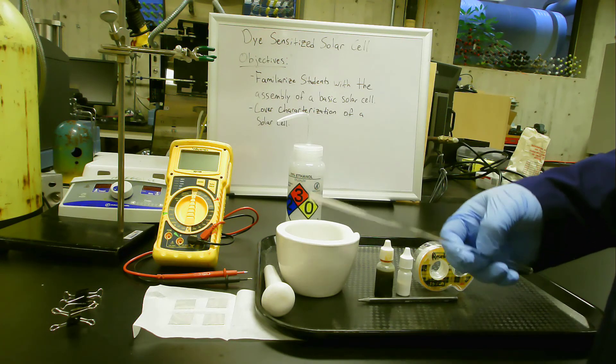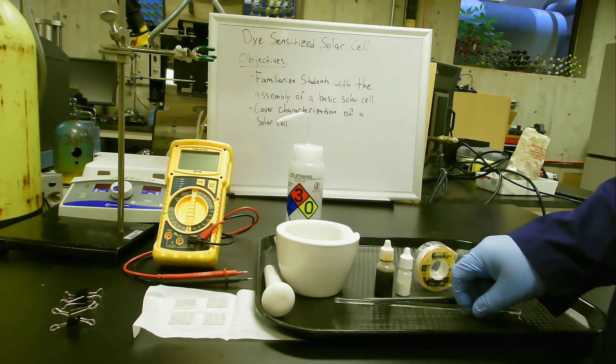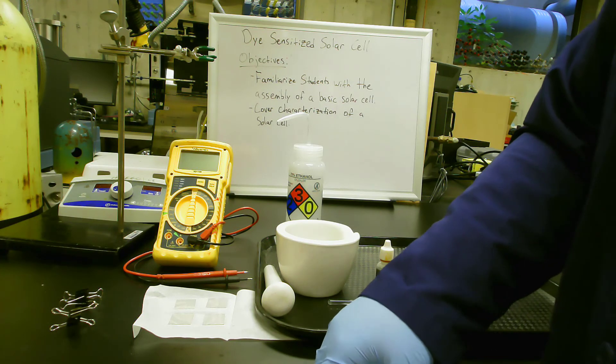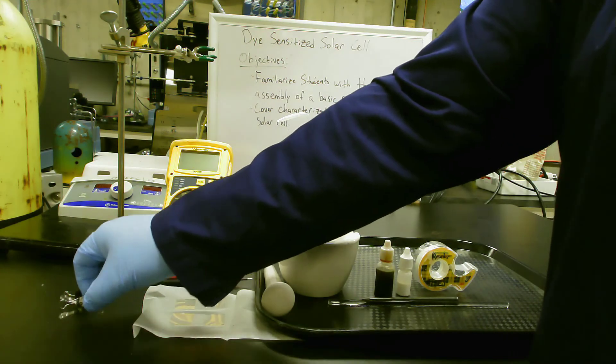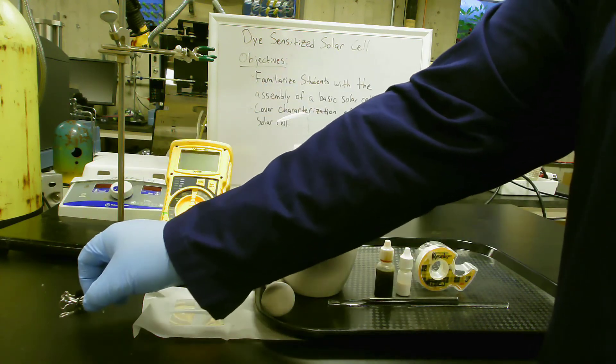We have a glass stir rod, which is a basic laboratory material. Last but not least is a couple of binder clips, which will be used at the very end to assemble the cell together, just clamping it.